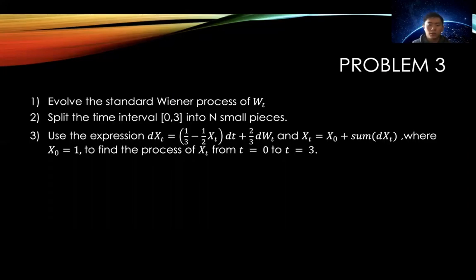In this problem, first, we're going to evolve the standard Wiener process of Wt. Then we are going to split the time interval into N small pieces. Then we are going to use these two expressions, dXt and Xt, where X0 equals to one, to find the process of Xt from t equal to zero to t equal to three.